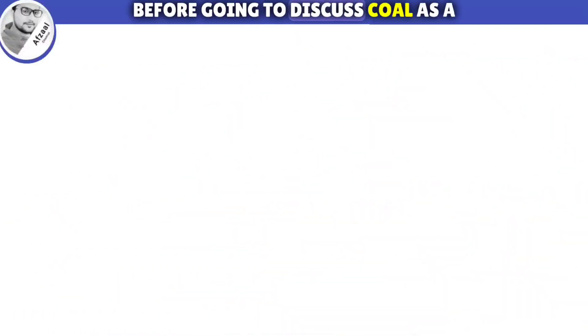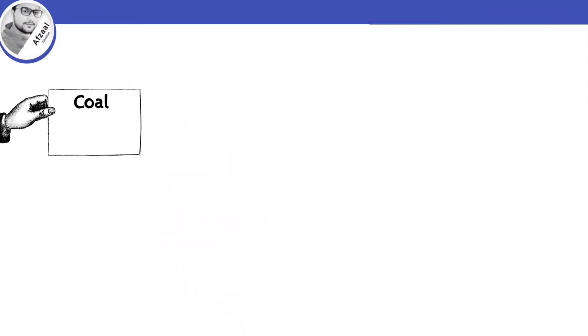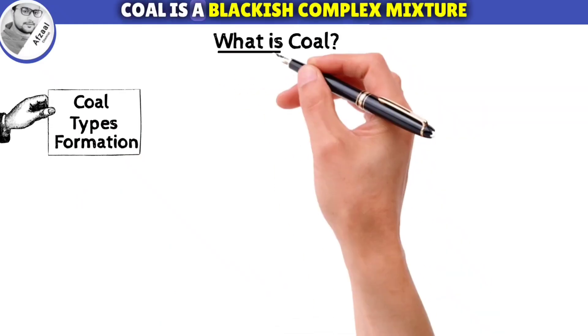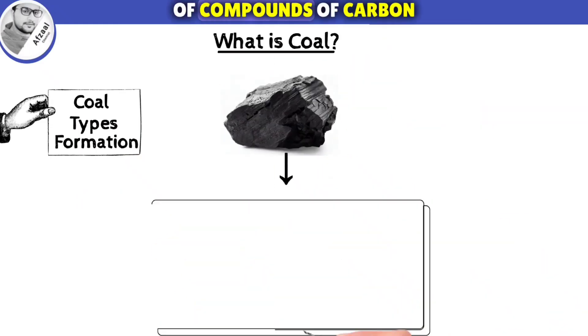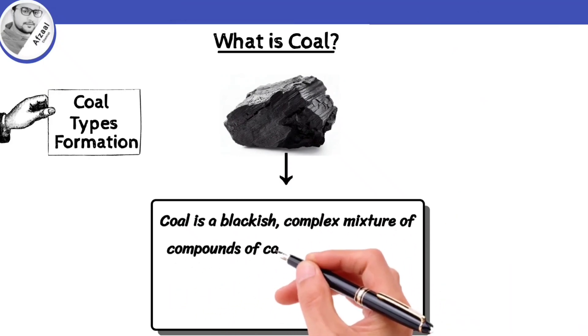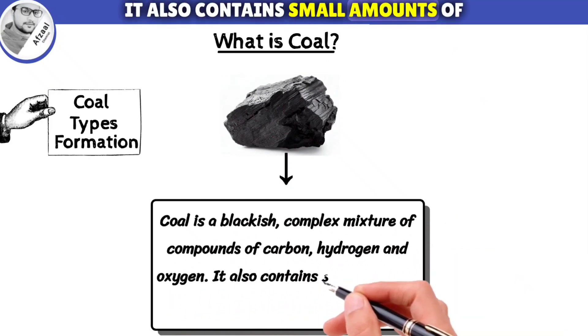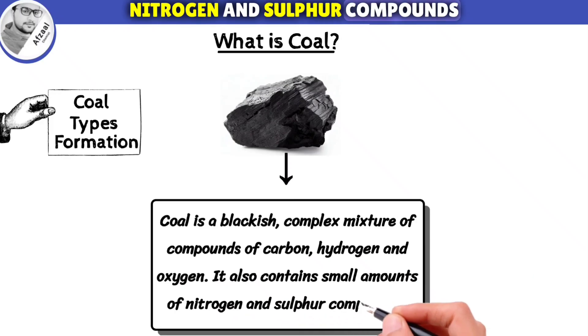Before going to discuss coal as a source of organic compounds, we learn about coal and its types and how they are formed. Let me define coal. Coal is a blackish, complex mixture of compounds of carbon, hydrogen and oxygen. It also contains small amounts of nitrogen and sulfur compounds.